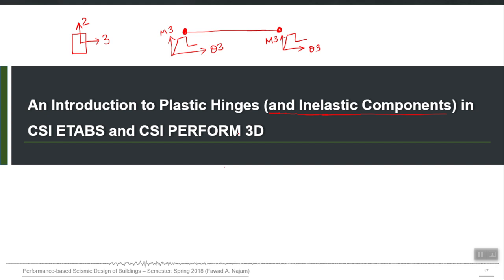One of the very basic cyclic behaviors is elastic perfectly plastic: the line will remain elastic, then it will become plastic, and then it will follow the same initial stiffness while unloading if it unloads from a point beyond the yield point. If it unloads from a point before the yield point, it will follow the same initial line, then yield in the opposite direction, and when it unloads it will again follow the same initial stiffness. This is called EPP, or elastic perfectly plastic.